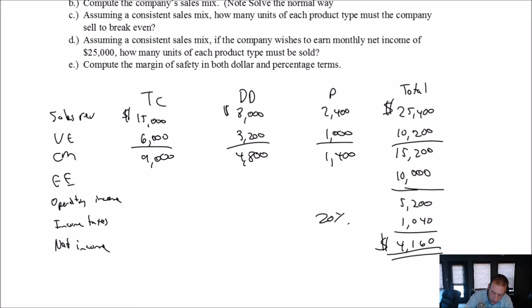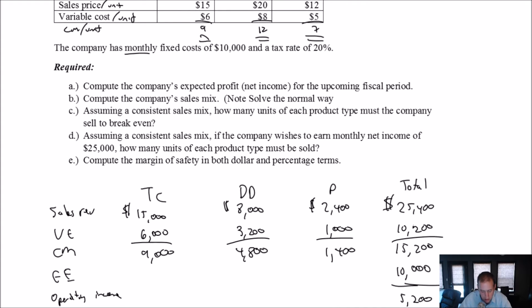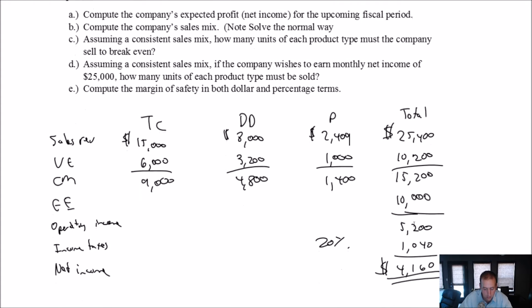So, there we've got it. We've figured out our net income. We've prepared a full income statement. And again, we didn't have to necessarily. It's going to come in handy later, but all we really needed to do is compute the CM and kind of go down from there. And we could have done that with our CM per unit computations that we did at the top. But there's our expected profit, our expected net income after tax for the upcoming fiscal year.